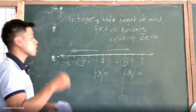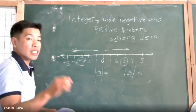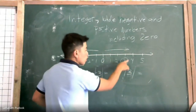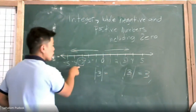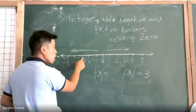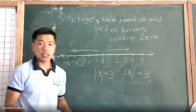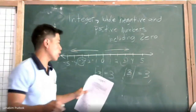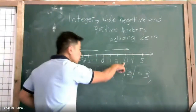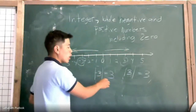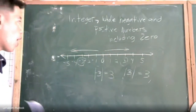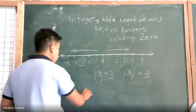Whether the number is negative or positive, in absolute value we are talking about the distance from zero. For example, positive three: one, two, three steps — so the absolute value of positive three is three. For negative three: one, two, three steps — the absolute value of negative three is also three. Whether negative or positive, the absolute value is always positive because we are talking about distance, not the value itself.